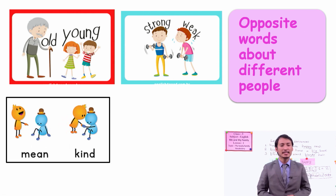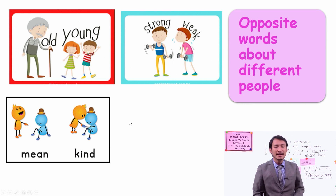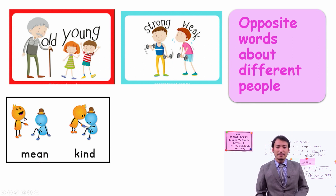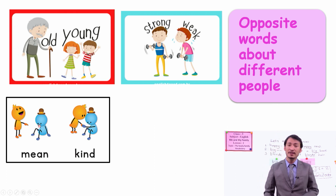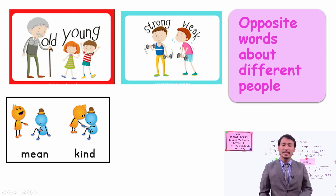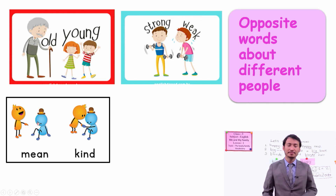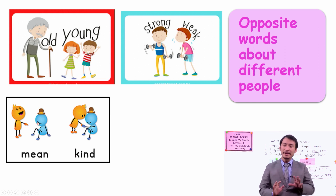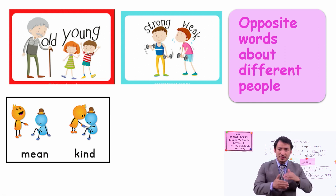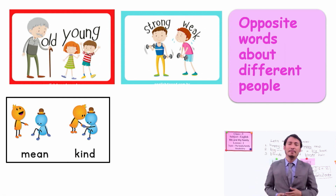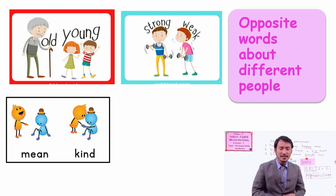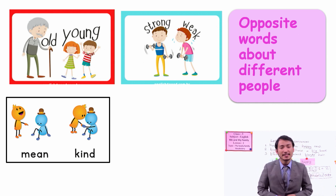Another word is mean and kind. Can you see here what the person is doing to another one? Yes, the yellow one is doing a very bad thing to others. Doing bad things like teasing, laughing at others, is being mean.